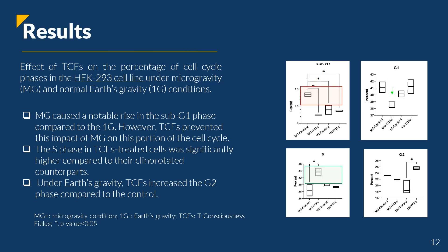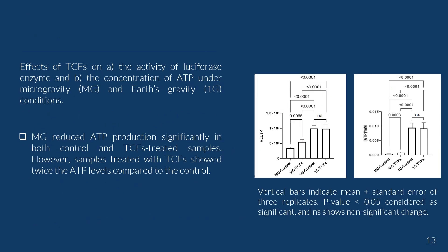In the HEC-293 cell line, similarly, microgravity caused a notable rise in the sub-G1 phase compared to Earth's gravity. However, T-Consciousness Fields prevented this impact of microgravity on this portion of the cell cycle. The S-phase in the T-Consciousness-treated cells was significantly higher compared to their clino-rotated counterparts. Moreover, under Earth's gravity condition, T-Consciousness Fields increased the G2 phase compared to the control. Evaluating the concentration of ATP showed that microgravity reduced ATP production significantly in both control and T-Consciousness Fields treated samples. However, samples treated with T-Consciousness Fields showed twice the ATP levels compared to their control.